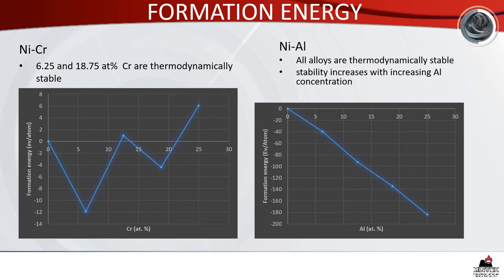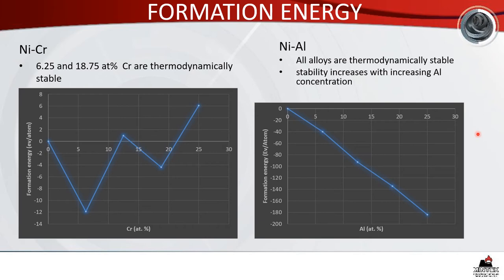Looking at the formation energies for nickel-chrome alloys, the stable alloys are at 6.25 and 18.75 atomic percent, whereas the rest showed a positive formation energy. For nickel-aluminium alloys, all alloys are thermodynamically stable and the stability increases with increasing aluminium concentration. The formation energy for nickel-aluminium alloys is more negative compared to nickel-chrome alloys, meaning that nickel-aluminium alloys are more thermodynamically stable.